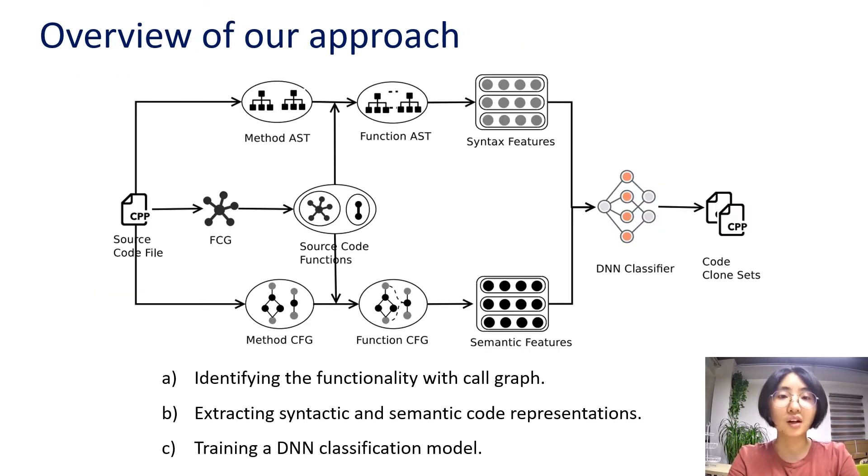Our proposed approach consists of the following three components. The first one is identifying the functionality with call graph. The second one is extracting syntactic and semantic code representations. The last one is training a DNN classification model. Next, I will detail the design of each part.